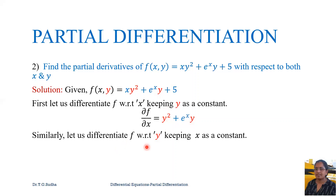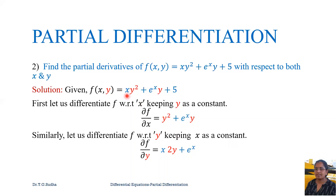Similarly, differentiating f = xy² + eˣy + 5 with respect to y, keeping x as constant: x is retained as is, y² differentiates to 2y; eˣ is a constant and is retained, y differentiates to 1 giving eˣ; and 5 is a constant becoming 0. So ∂f/∂y = 2xy + eˣ.